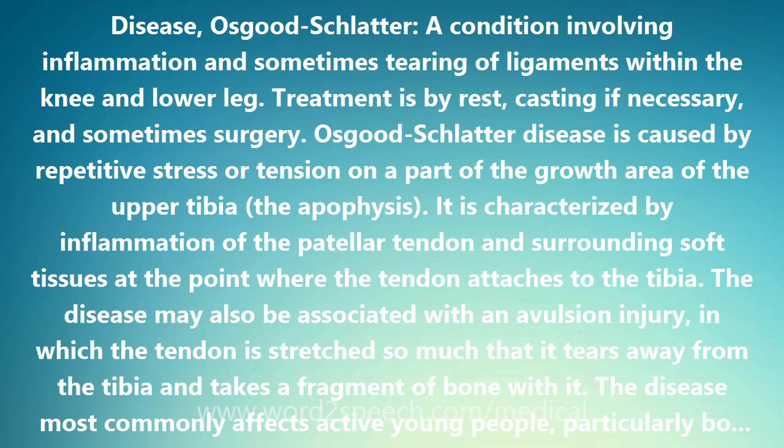Osgood-Schlatter disease is caused by repetitive stress or tension on a part of the growth area of the upper tibia, the apophysis. It is characterized by inflammation of the patellar tendon and surrounding soft tissues at the point where the tendon attaches to the tibia. The disease may also be associated with an avulsion injury, in which the tendon is stretched so much that it tears away from the tibia and takes a fragment of bone with it.